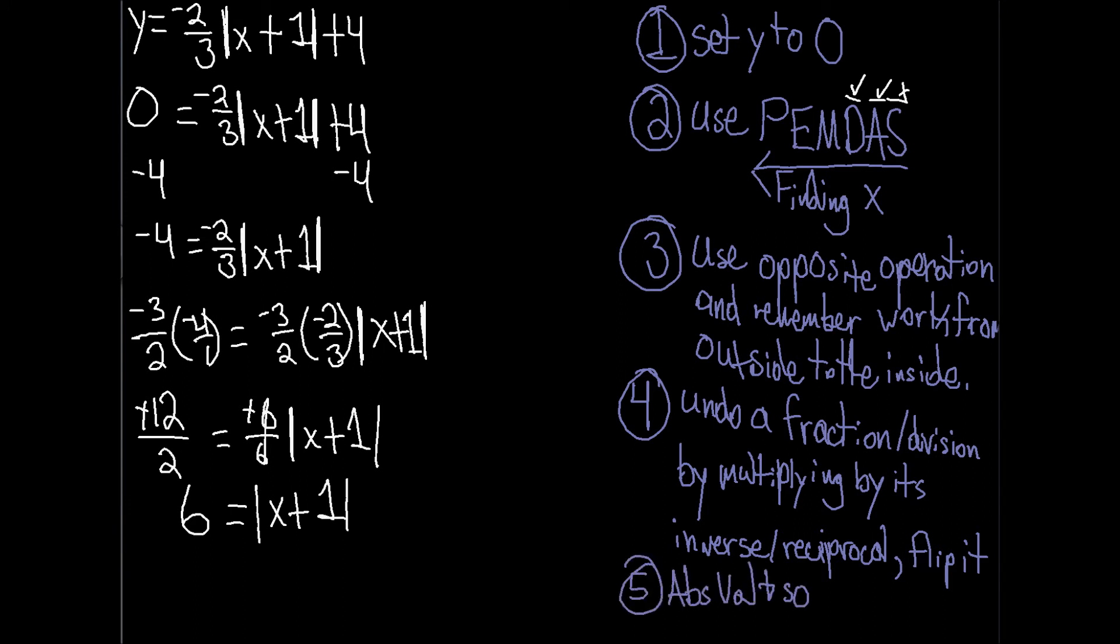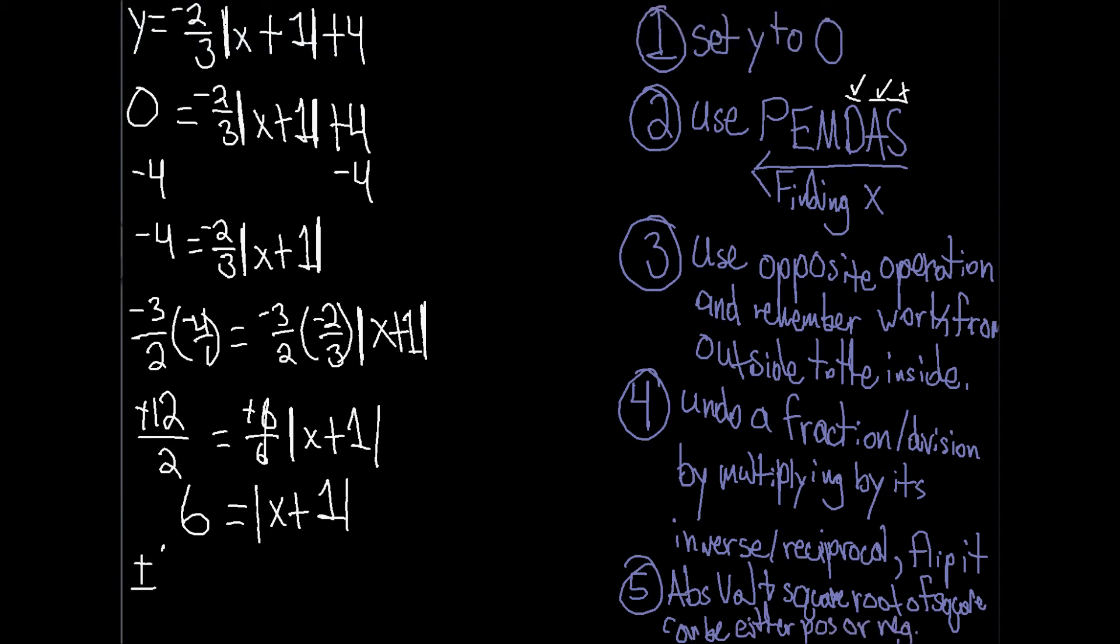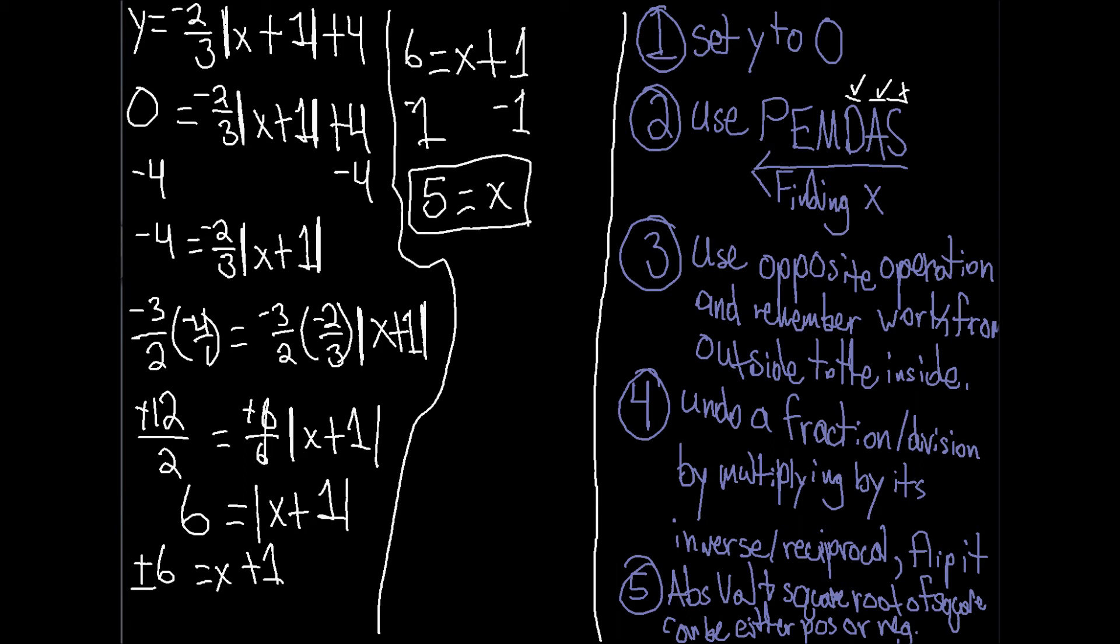Five, when you take the square root of a square or take the absolute value of a number, the result is always positive, regardless of whether the initial number is positive or negative. Remember that a negative times a negative is always a positive. With either positive or negative numbers working, now you know why there are two roots for both quadratic and absolute value functions.